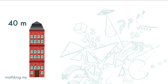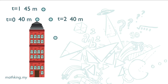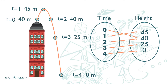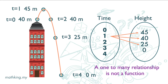A stone is thrown upward from the top of a building and falls to the ground. Here we show the height of the stone at different times. Set 1 is time and set 2 is the height of the stone. Every element in the first set is mapped to one and only one element in the second set. It is not possible to have a one-to-many relationship here. A one-to-many relationship is not a function.